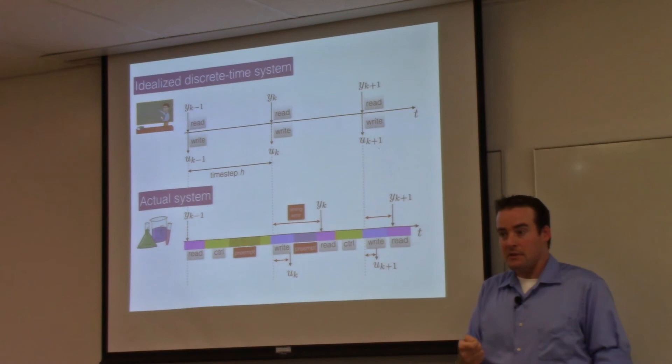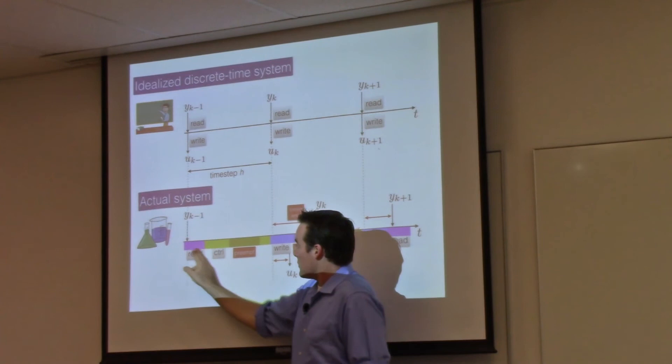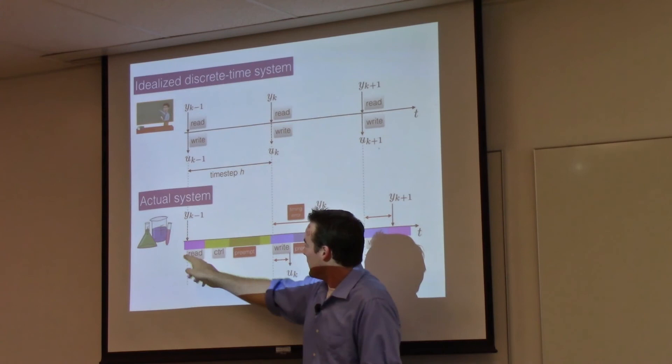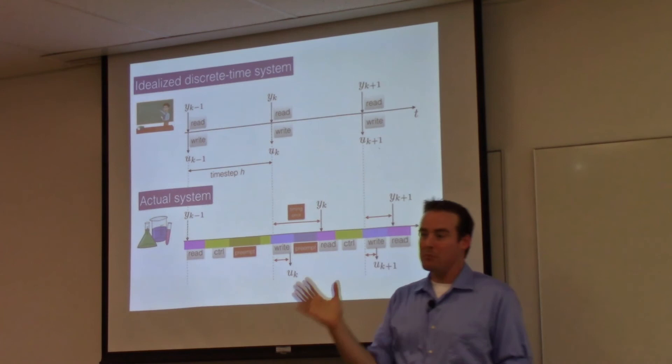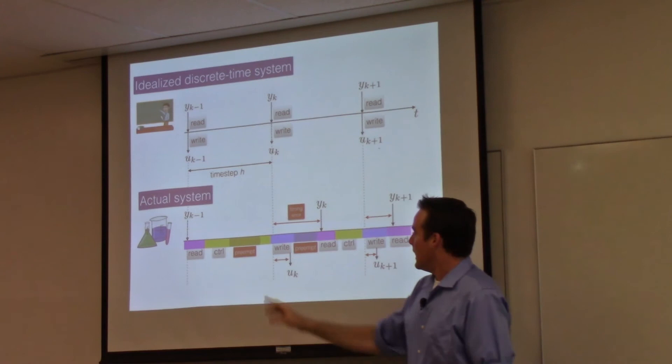If your controller is running on a general-purpose CPU on top of an operating system, you're going to read, and that's going to take a certain amount of time. You may not know at precisely which time the sensor measurement was physically sampled. Then you'll run a control algorithm, but that control algorithm will take some time and it might get preempted. The operating system might put it to sleep so that it can get packets from the network or service other high-priority tasks.